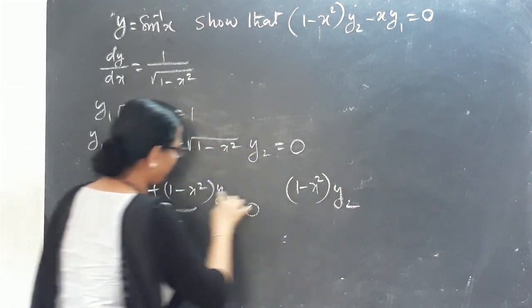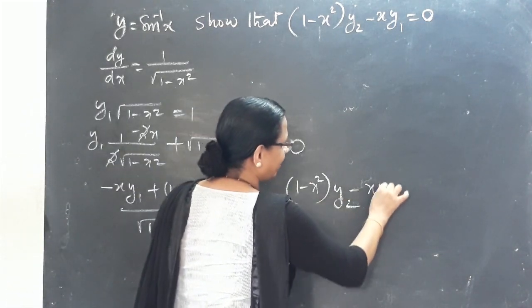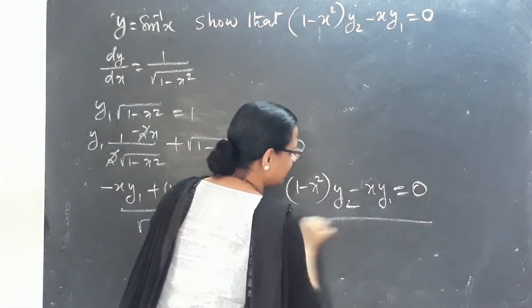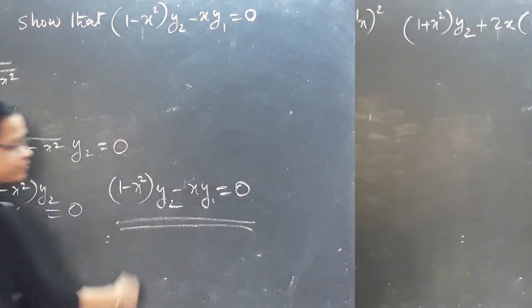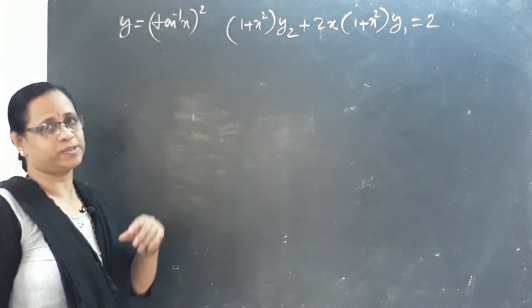After cross multiplying and simplifying, we get: (1 minus x²)·y2 minus x·y1 equals 0. This is the higher order differential equation result.